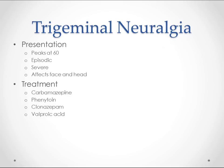Trigeminal neuralgia — I've never seen a patient with it, but it's extremely painful. The presentation peaks at age 60. It's episodic, and a lot of times people will know when it's coming — it has a type of aura associated with it in many cases. It's going to affect a large distribution of the trigeminal nerve, which is basically sensory to the face and cranium, so it will a lot of times affect the face. Treatment is carbamazepine, phenytoin, clonazepam, or valproic acid.